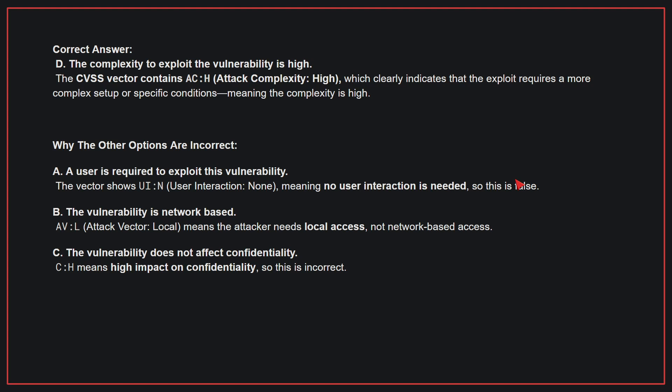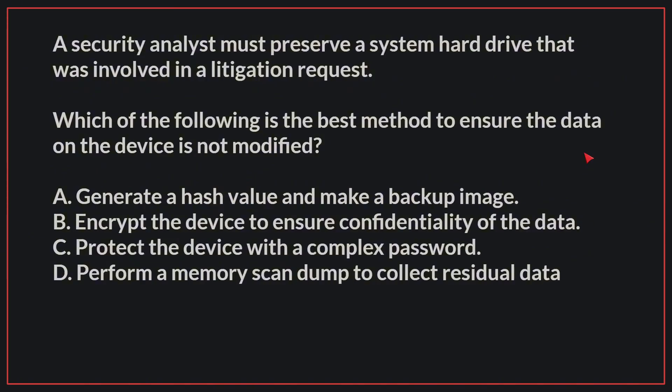Why the other options are incorrect: A — A user is required to exploit this vulnerability. The vector shows UI:N, meaning no user interaction is needed, so this is false. B — The vulnerability is network-based. AV:L means the attacker needs local access, not network-based access. C — The vulnerability does not affect confidentiality. C:H means high impact on confidentiality, so this is incorrect. Therefore, the correct answer is D.